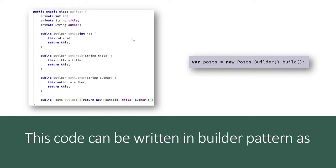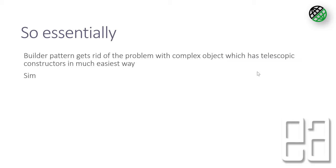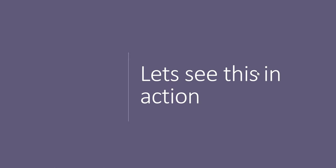There is only one constructor being called, which is the three-parameter Post class constructor. This reduces our code dramatically. To call this builder class, you just do PostBuilder.build() — that's it — and you can create a Post type and get values from it. If you want to set values, you do PostBuilder.setID(), setTitle(), setAuthor(), which is very easy with the builder pattern.